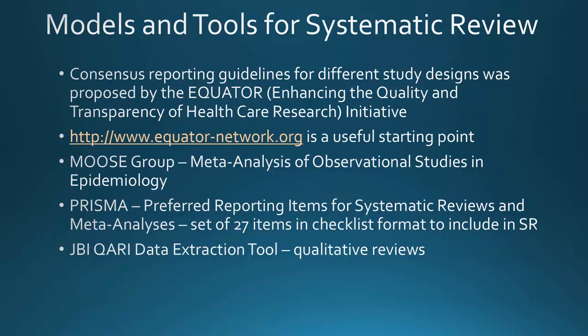Now we'll get into information about models and tools. If you're going to write a good scientific paper, you should consider going to the EQUATOR site. The EQUATOR site has links to guidelines for all types of research reporting — it's a great resource for faculty and students, and it pulls together all the different types of papers that scientists might want to write. On the EQUATOR site there are links to the MOOSE Group, the PRISMA Standards, and the Joanna Briggs Institute has data extraction tools for qualitative studies as well.